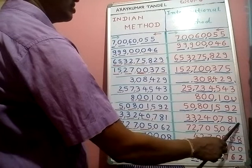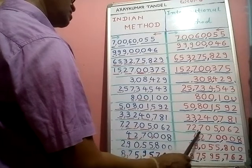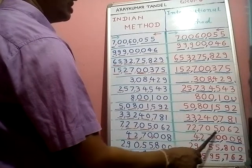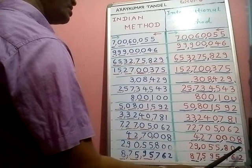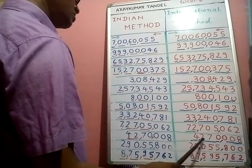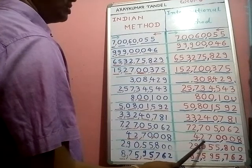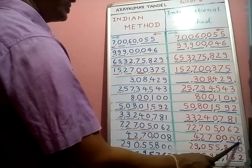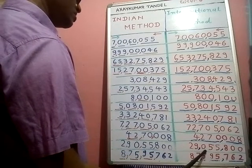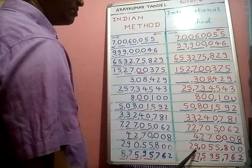Next one — ones, tens, hundreds, thousands, ten thousands, hundred thousands, millions, ten millions. We read: seven million seven hundred five thousand sixty-two. Next one — ones, tens, hundreds, thousands, ten thousands, hundred thousands, millions. We read: four million two hundred seventy thousand eight.